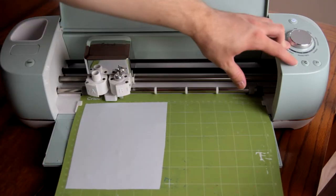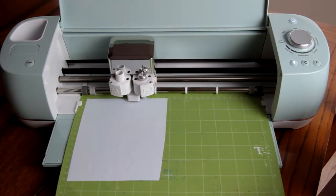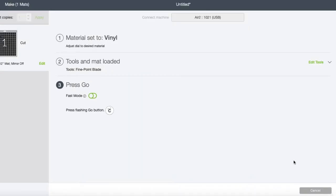Now we can go ahead and load in our mat, and if you want you can go into Design Space and turn on fast mode if your model supports it. And then go ahead and start cutting.